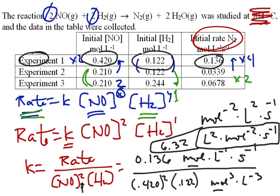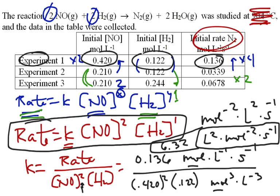This is a messy page, but if somebody said write the rate law, I would write: rate equals K times [NO]² times [H₂]¹, where K equals 6.32 L²·mol⁻²·s⁻¹. Those units are always true if you have a third-order reaction overall. Getting used to those units is useful since on an exam, identifying units for K is usually worth a point.